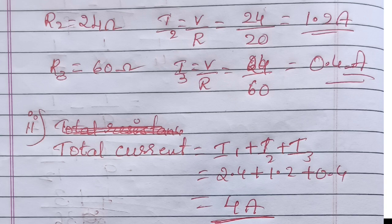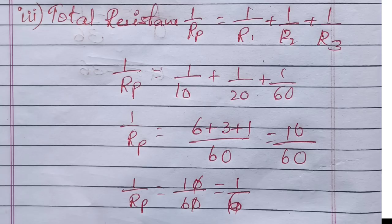Total resistance, we have formula: 1 by Rp equals 1 by R1 plus 1 by R2 plus 1 by R3. 1 by Rp equals 1 by 10 plus 1 by 20 plus 1 by 60. We take LCM.